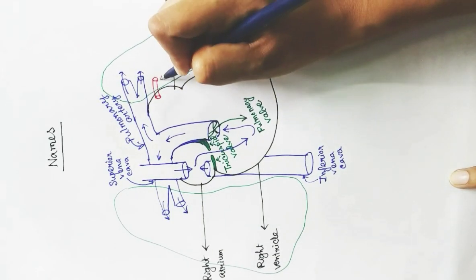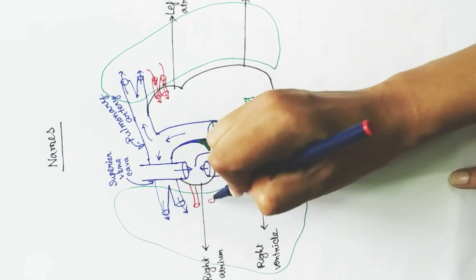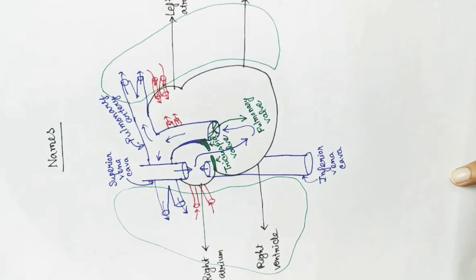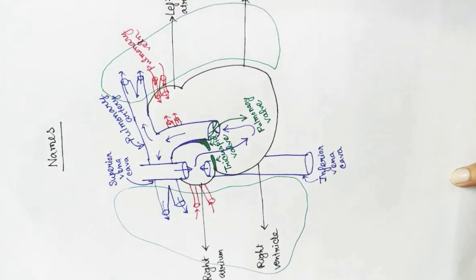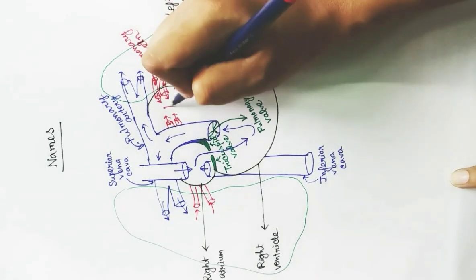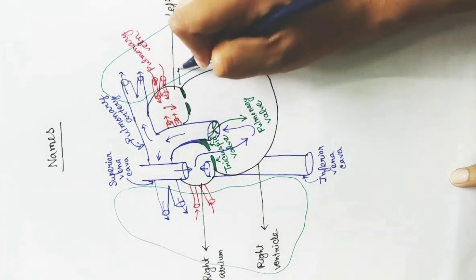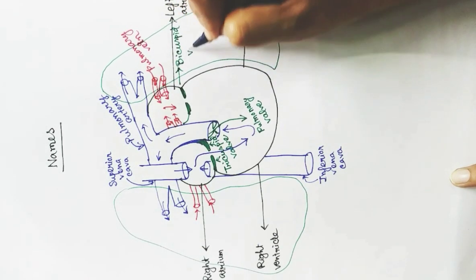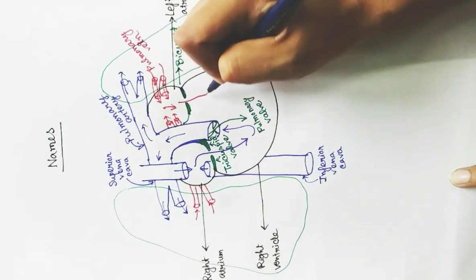After gas exchange in the lungs, oxygen-rich blood enters the left atrium from both lungs. The vessels carrying this oxygen-rich blood to the left atrium are called pulmonary veins — veins because they carry blood towards the heart, and pulmonary because they come from the lungs. There is another valve between the left atrium and the left ventricle called the bicuspid valve, or mitral valve.